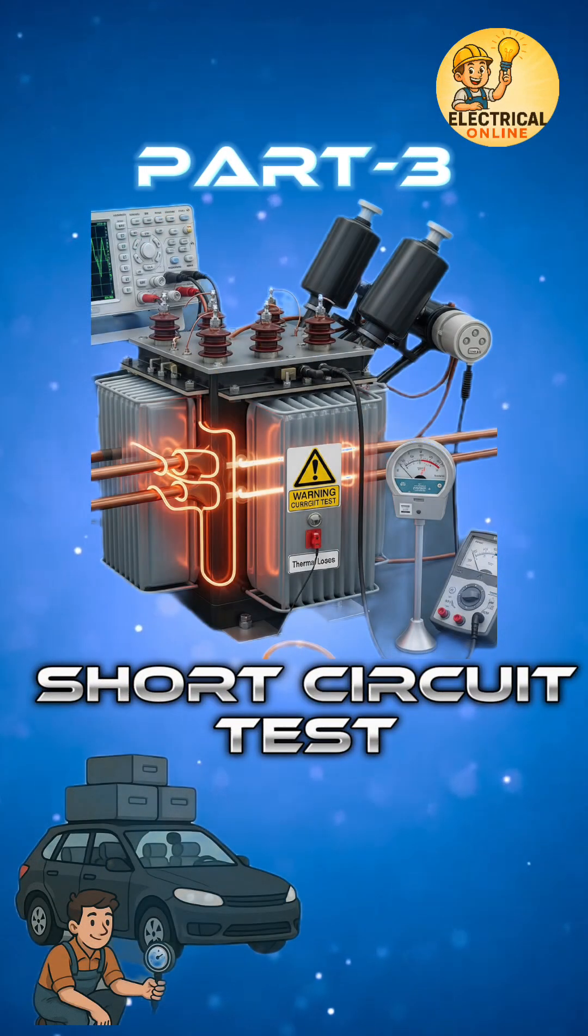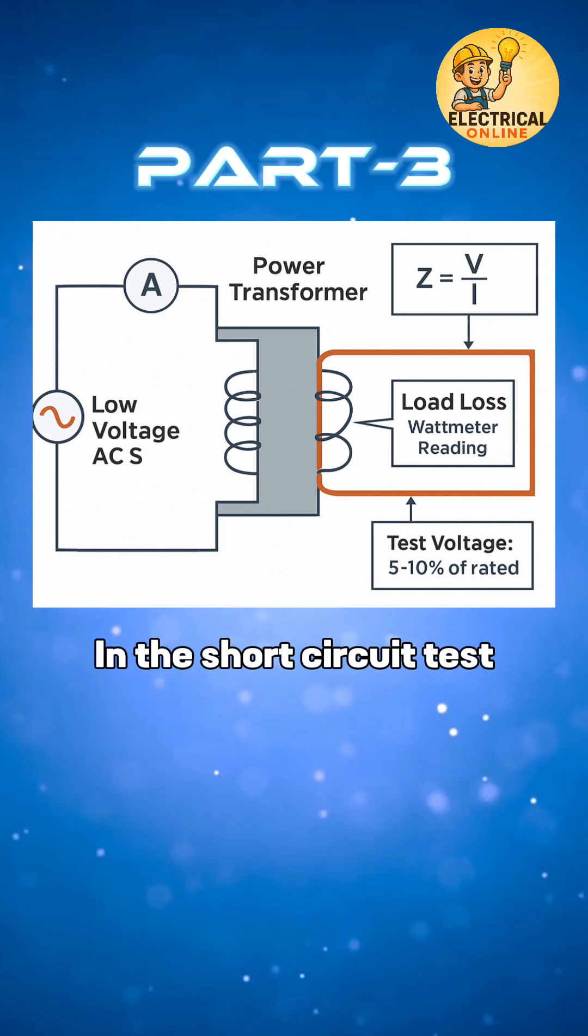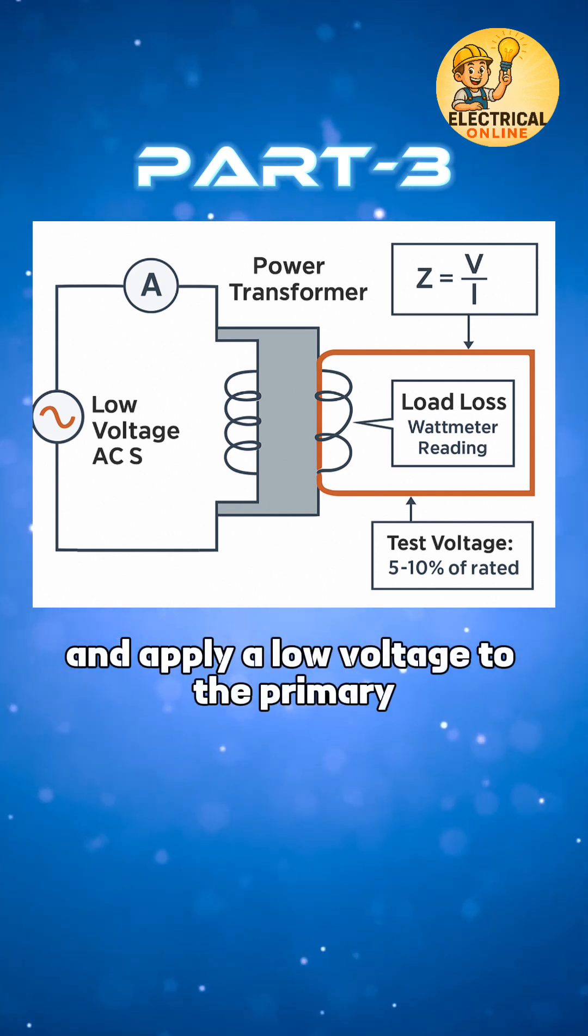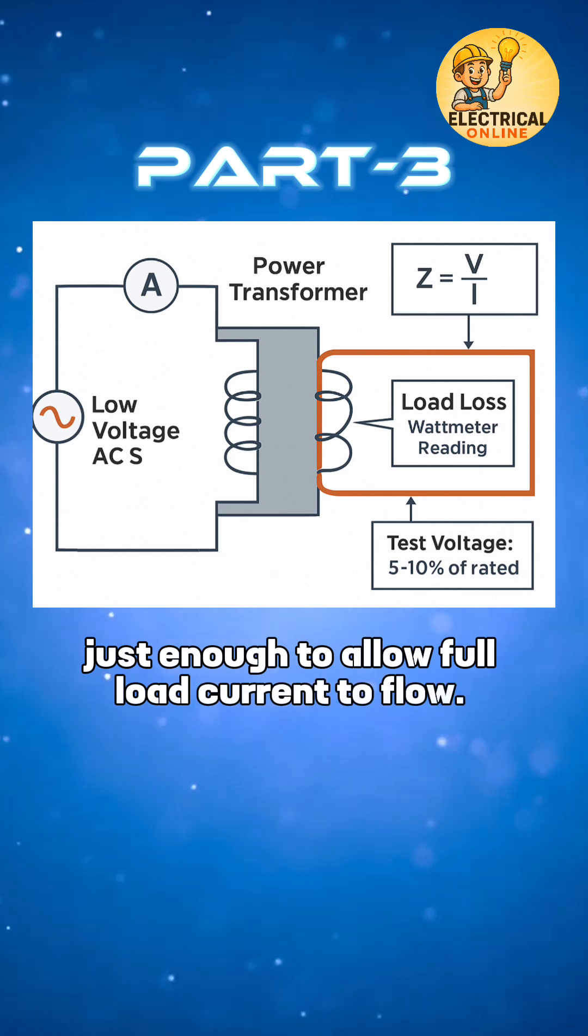In transformer test series, the third one is short circuit test. In the short circuit test, we intentionally short the secondary winding and apply a low voltage to the primary, just enough to allow full load current to flow.